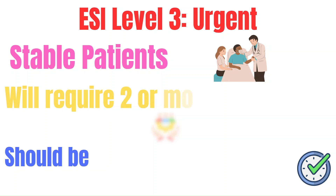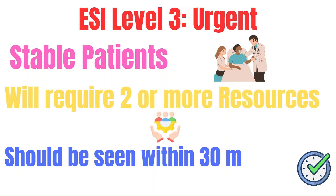For an ESI level three, they're known as urgent patients. They are assigned to patients with stable vital signs who do require prompt assessment and interventions, but their condition is not life-threatening at this moment. These patients should be seen within 30 minutes. Examples include abdominal pain, syncope or near syncope, exacerbation of a chronic issue like asthma or COPD without changes in vital signs, possible fractures, and skin infections like cellulitis. These patients are stable but require two or more resources to diagnose and treat their condition.